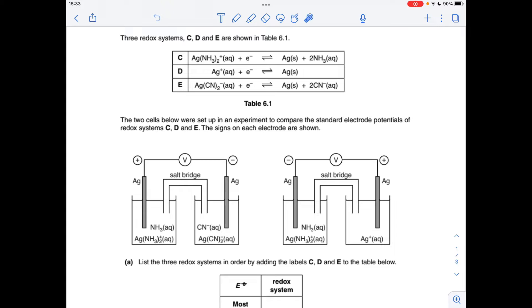So the most positive electrode potential is the positive electrode. So that's telling us that this half cell here, which is C, has a higher or more positive electrode potential than this one here, which is system E.